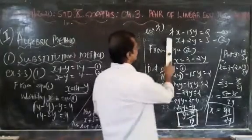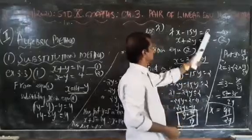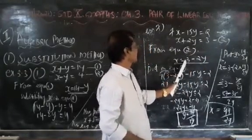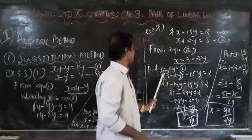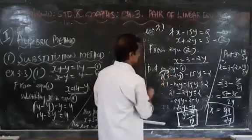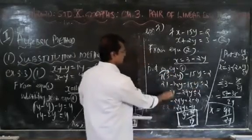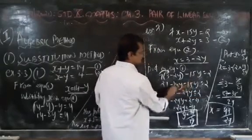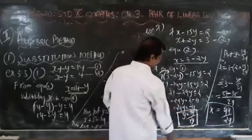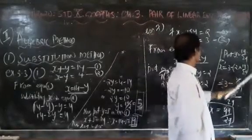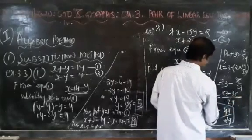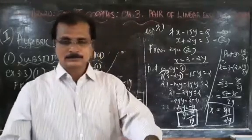To repeat once more: equation number 1 is 7x minus 15y equal to 2, and equation number 2 is x plus 2y equal to 3. From equation number 2, x equal to 3 minus 2y. Substituting into equation number 1: 7 times (3 minus 2y) minus 15y equal to 2, giving 21 minus 14y minus 15y equal to 2, so 21 minus 29y equal to 2, meaning y equal to 19 by 29. Then x equal to 3 minus 38 by 29 equal to 49 by 29.